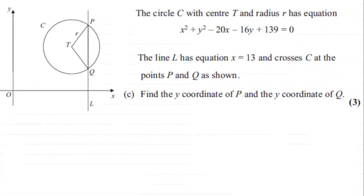Hi. Now for this next part of the question, we're told that the line L has equation x equals 13 and crosses C at the points P and Q as shown.